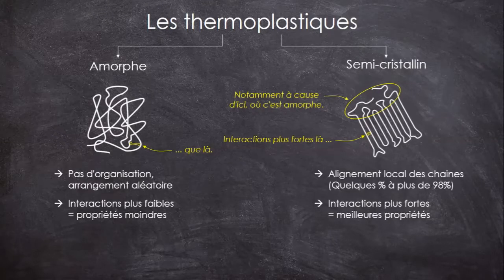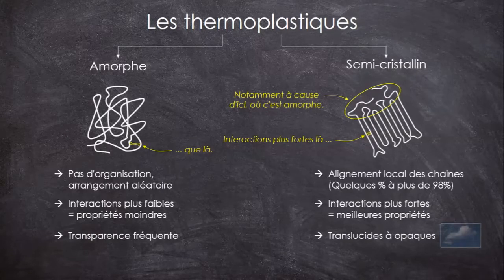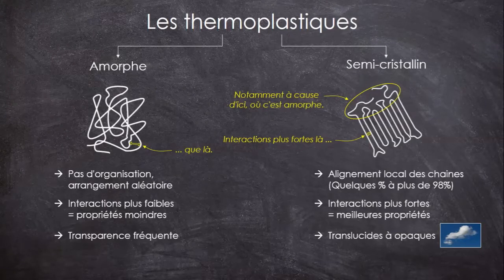Ils sont aussi très souvent translucides ou opaques, parce qu'en fait les chaînes alignées diffusent la lumière, comme les gouttelettes dans les nuages, alors que les amorphes, eux, sont très souvent transparents de base.